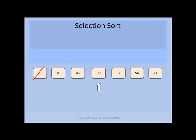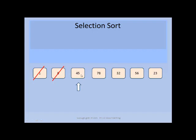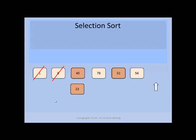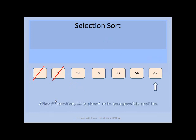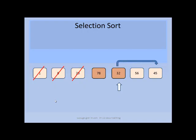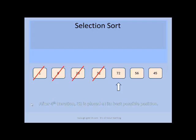So 8 has been placed at its best position and is discarded from the remaining list. We are now left with 45, 78, 32, 56, and 23. The next minimum pointer will be 45, which is compared with 78 and the rest of the elements. We keep comparing and placing the minimum element at its best position in every iteration. After the 4th iteration, 32 has been placed at its best position and we are left with 72, 56, and 45.